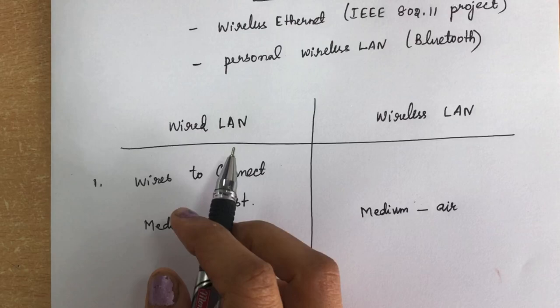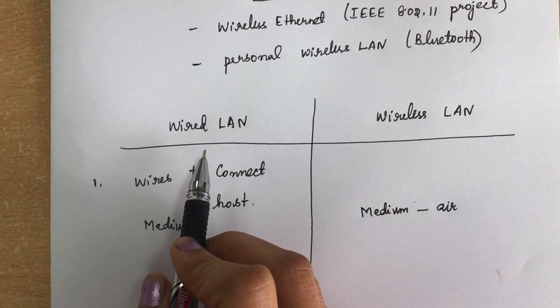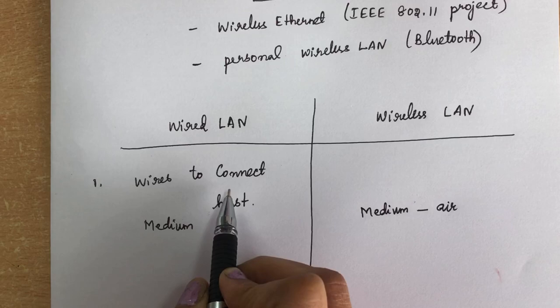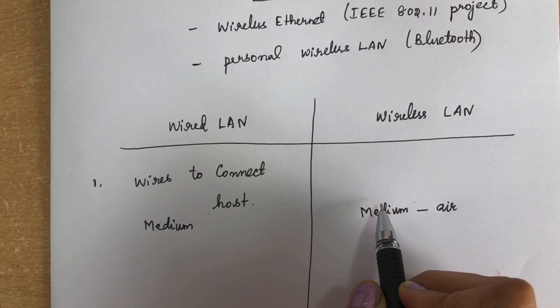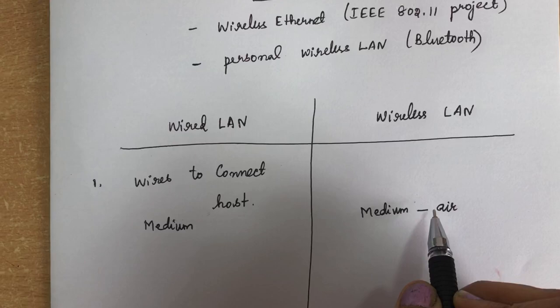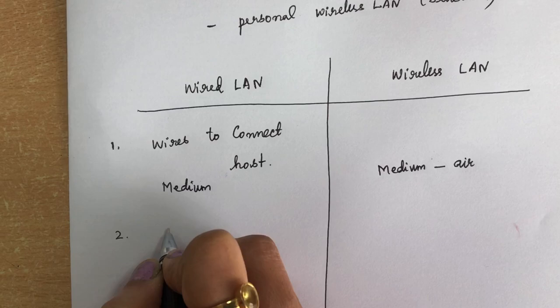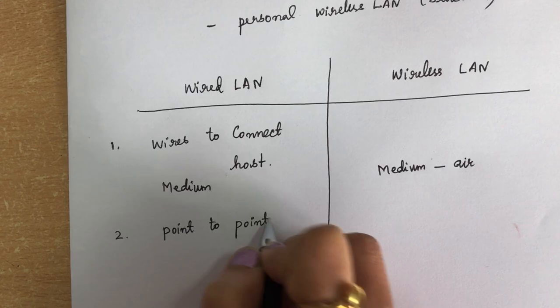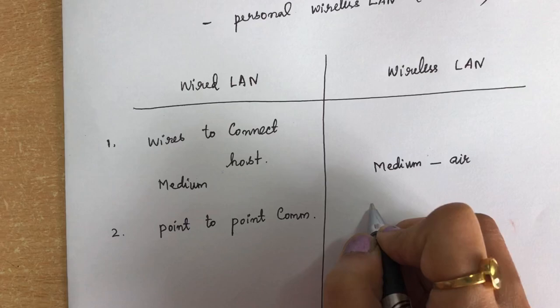First we will see the comparison between wired LAN and wireless LAN. The first difference is the medium. In wired LAN, wires are used to connect between the devices. In wireless LAN, the medium used is air, and signals are broadcasted through air. In wired LAN there is point-to-point communication between devices, whereas in wireless LAN, broadcast is done.